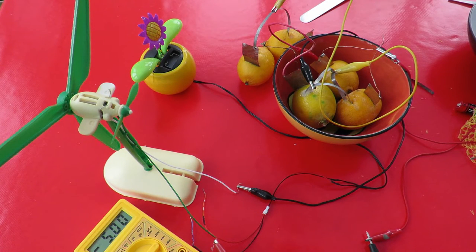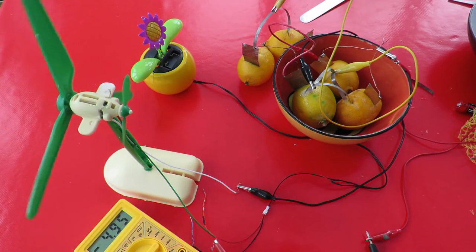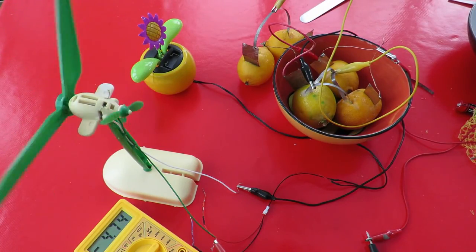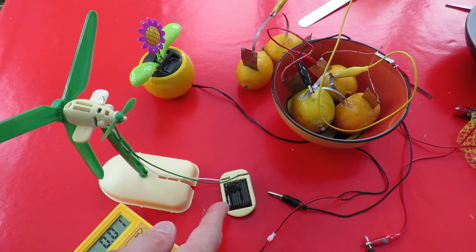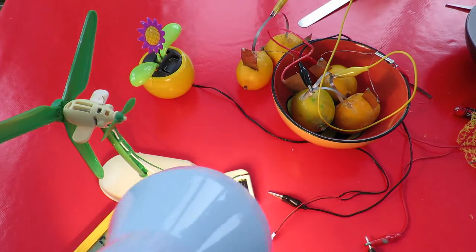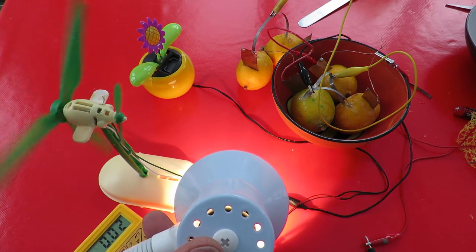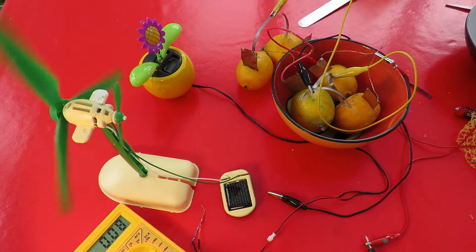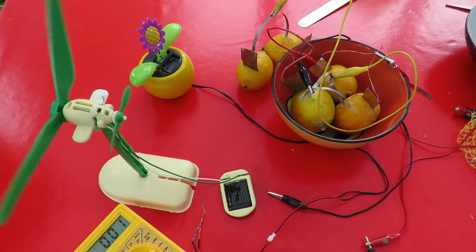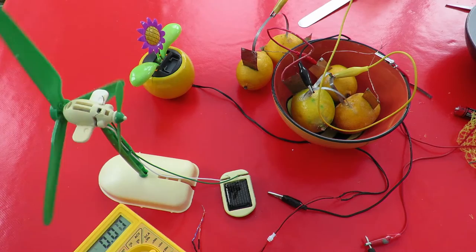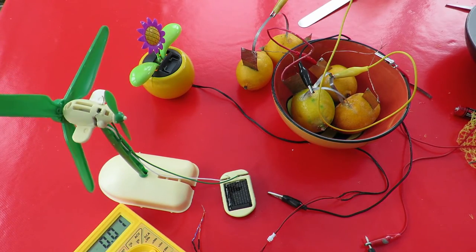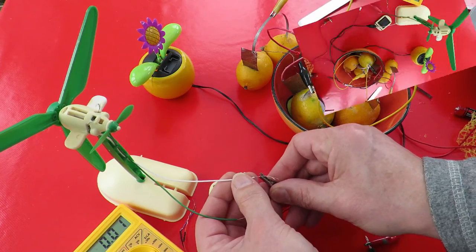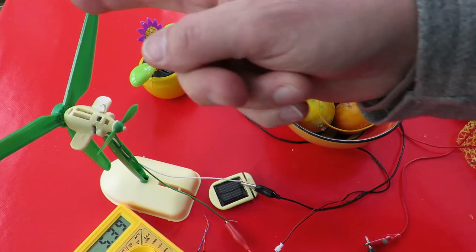Right, we've got nearly 5, oh, we've got 5 milliamps. Still not enough to drive the motor. I'll just put a little solar panel back onto it. So, bottom line is we're just not getting enough power out of the lemons. And that's using magnesium strips and copper. That's about nearly 5.5 milliamps now.